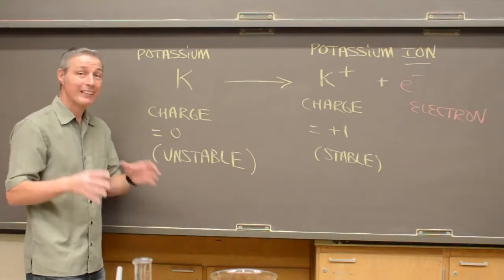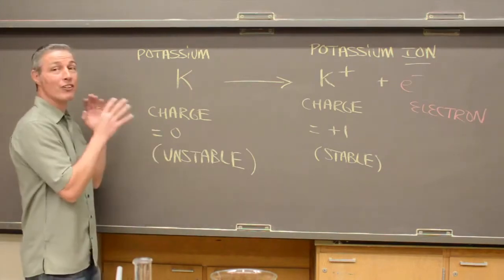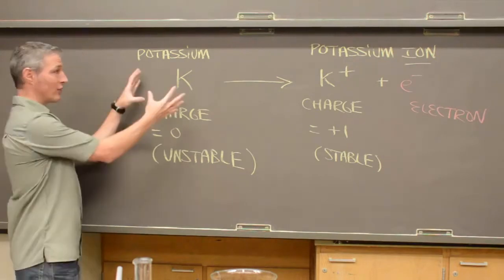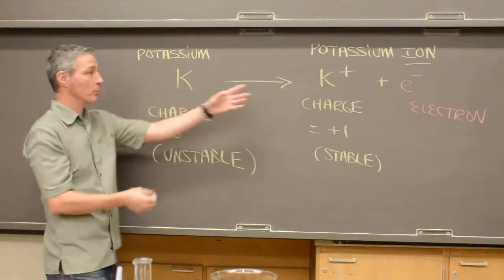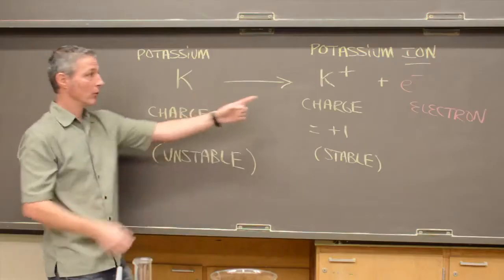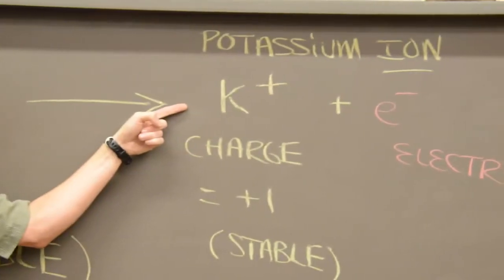Potassium is one of the elements. There's a stable form of potassium and there's an unstable form. This is potassium metal, this is potassium ion. Now this metal is unstable, but this is what you have in your body, and thankfully it is stable.